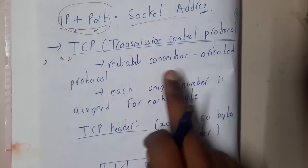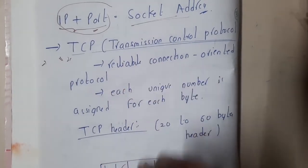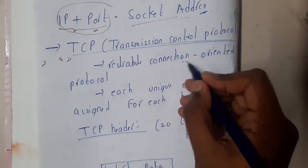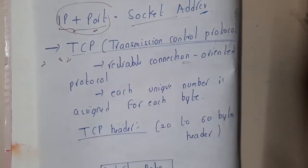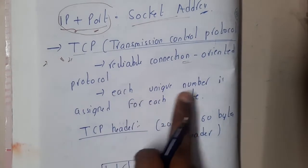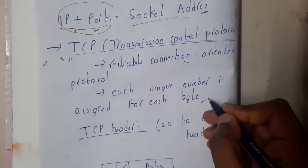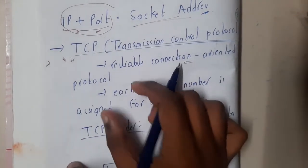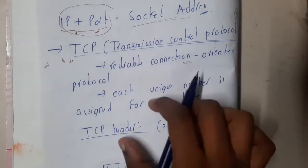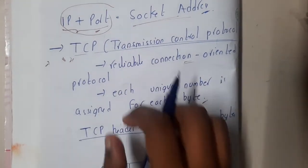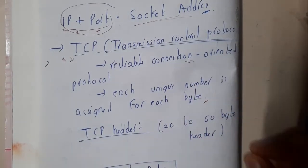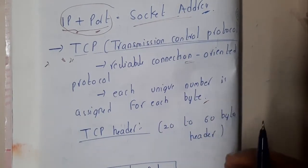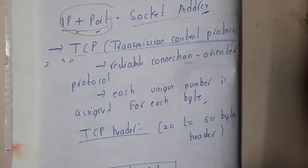TCP is a reliable and connection-oriented protocol. I'll be clearly explaining what exactly connection-oriented means and how the connection orientation takes place. Each unique number is assigned for each byte — so basically if you are sending a packet of 100 bytes from sender to receiver, each and every byte is numbered. TCP is connection-oriented and is the most reliable transmission of data.